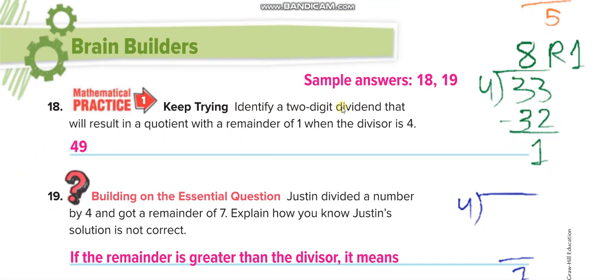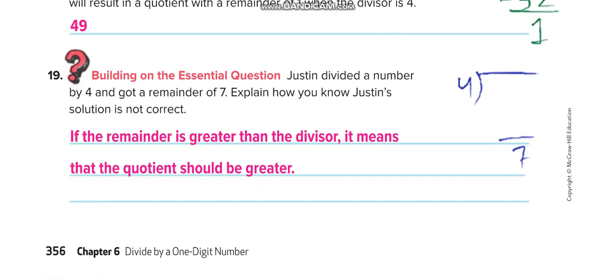Identify a 2-digit dividend that will result in a quotient with a remainder of 1 when the divisor is 4. Here it is. Justin divided a number by 4 and got a remainder of 7. Explain how you know Justin's solution is not correct. Because the remainder is 7 and the divisor is 4. Remainder is 7, divisor is 4. It's not possible. Remainder should be less than the divisor. It can't be even equal to divisor. You can divide one more time.